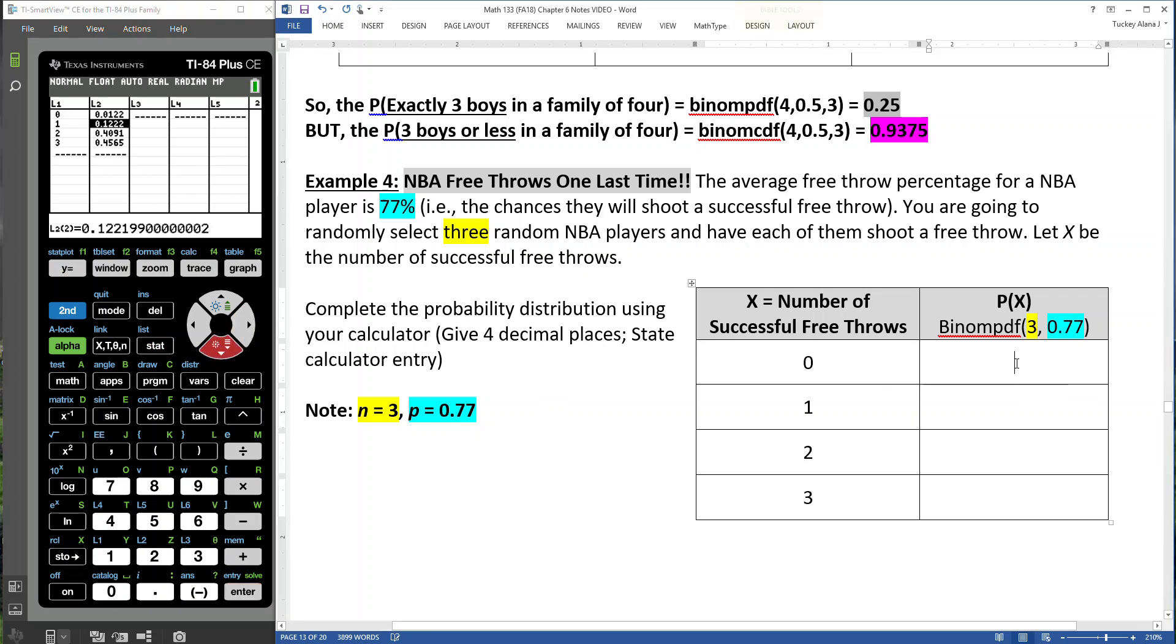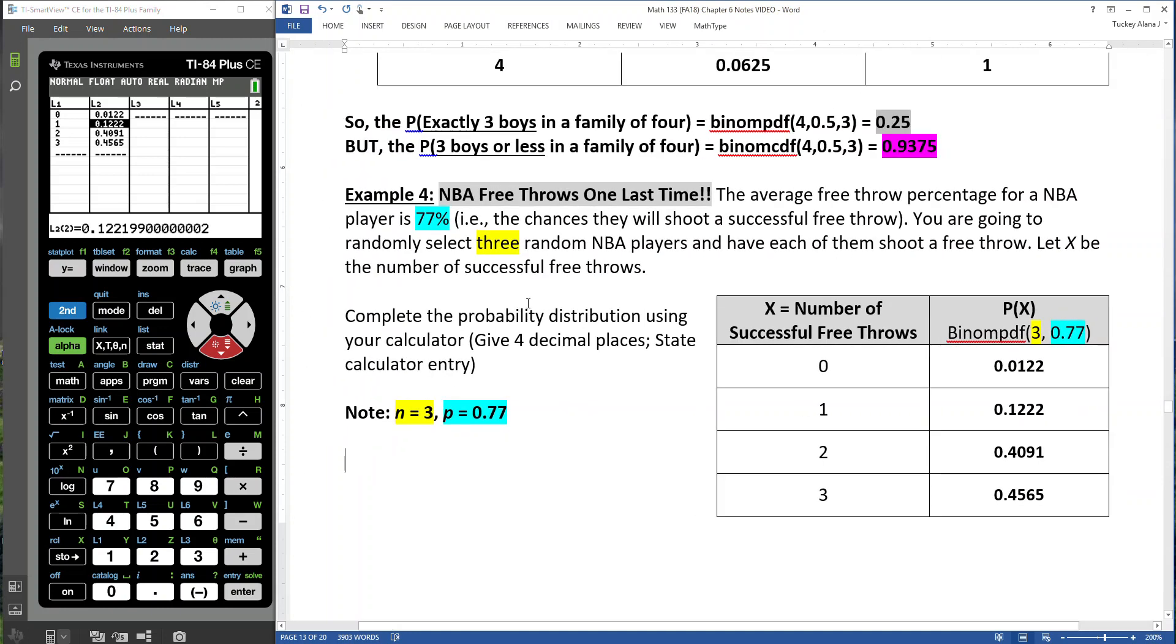So I can see this probability is 0.0122. This is 0.1222, 0.4091, and 0.4565. It found the same probabilities as the beginning, but a lot faster, and without a tree diagram, without the multiplication rule, it just found it all quickly for us. Very nice.